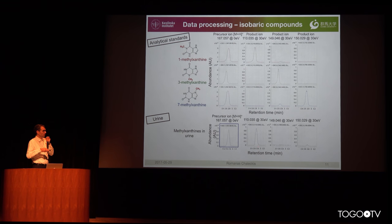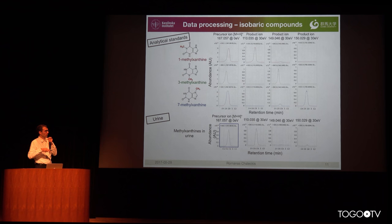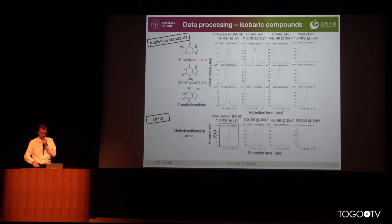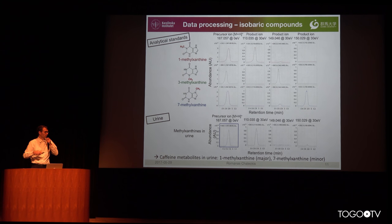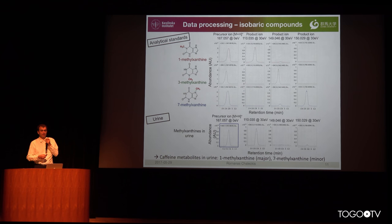By looking at the fragmentation data we can see that at 30 electron volts we get a rather large peak and another smaller one at m/z 150, corresponding to 1-methylxanthine and 7-methylxanthine respectively. Indeed, checking the literature confirms that 1-methylxanthine is a major metabolite of caffeine and 7-methylxanthine is a minor metabolite.